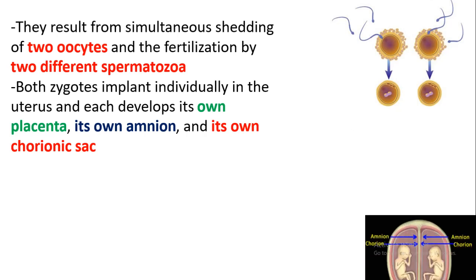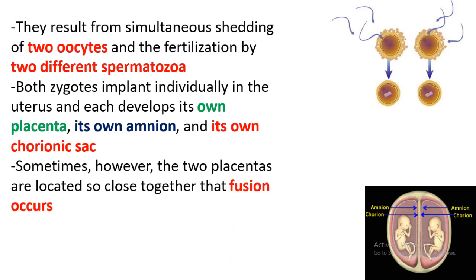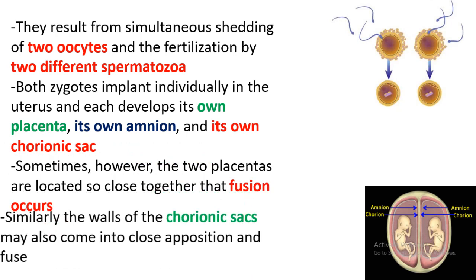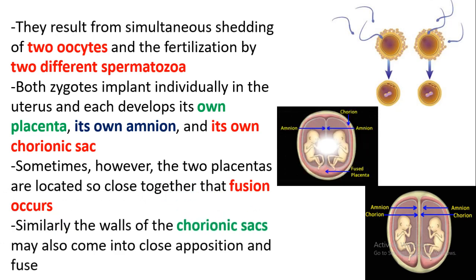However, sometimes these twins may be fused. In that case, it can either be the placenta or the chorion which has been fused. But unlike in monozygotic twins, in dizygotic twins we mostly expect two placentas, two amnions, and two chorionic sacs.